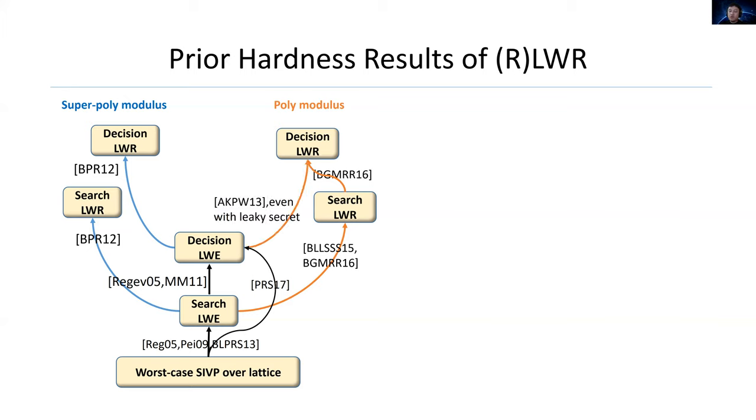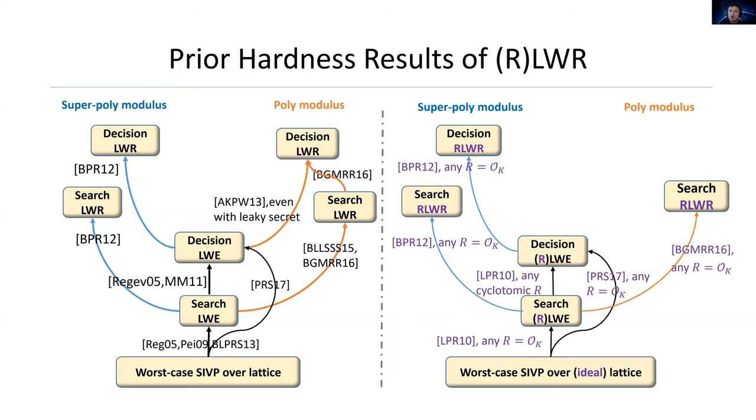The work by Alwen, Krenn, Pietrzak, and Wichs in 2013, and the work by Bogdanov, Guo, Masny, Richelson, and Rosen in 2016, separately show reductions from search LWE to search LWR with poly modulus. The work BGMR16 also shows the reduction from search to decision LWR with poly modulus. Interestingly, the work AKPW13 shows another reduction from decision LWE to decision LWR with poly modulus. Their reduction holds even with leaky secret.